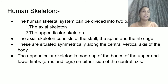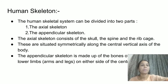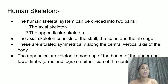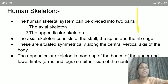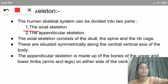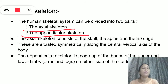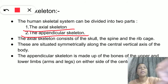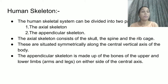Now let us study in detail about the human skeleton. The human skeletal system can be divided into two parts: the axial skeleton and the appendicular skeleton. You have to remember both these names and practice their spellings, as they are difficult words.